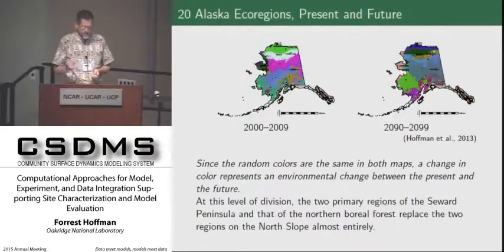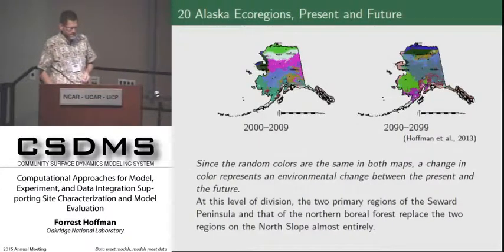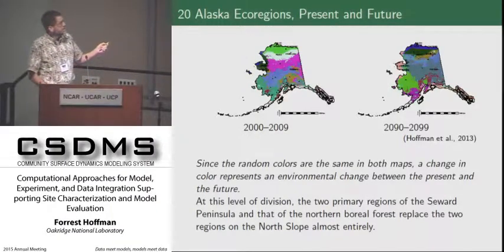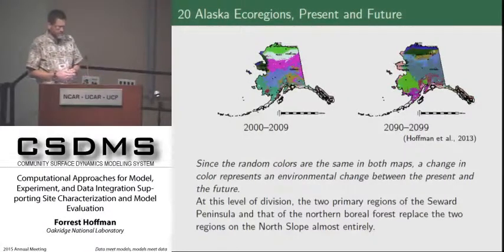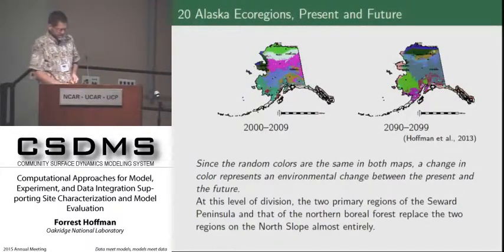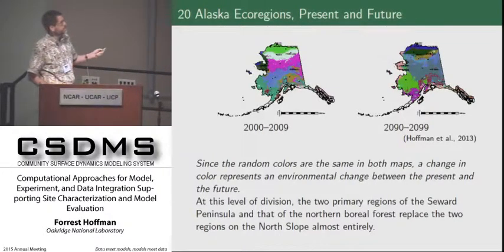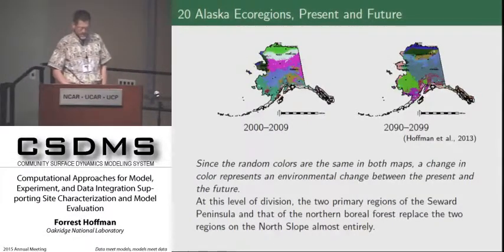What you see here is that the conditions presently on the Seward Peninsula will actually migrate to the north slope of Alaska in 100 years under this particular scenario, because they're both colored the same way. We can turn up that k-knob and ask for a larger number of clusters, but we see basically the same result — the Seward Peninsula is broken into two basic ecoregions, both of which then migrate to the north slope of Alaska. So this is a warmer, wetter environment for the north slope in 100 years. You can also see things like the boreal forest, which is completely replaced by something that looks entirely different in the future.